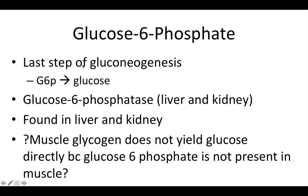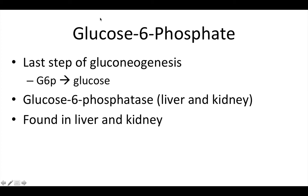Glucose-6-phosphatase converts glucose-6-phosphate to glucose. Glucose-6-phosphate is the very last step of gluconeogenesis, whereas it's the very first step of glycolysis. To summarize: it's the last step of gluconeogenesis, the enzyme that converts G6P to glucose is glucose-6-phosphatase, and this enzyme is found in the liver.